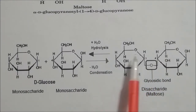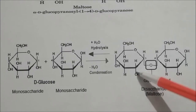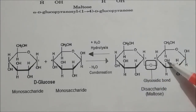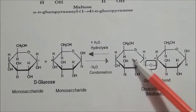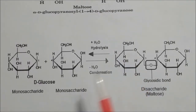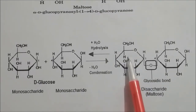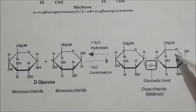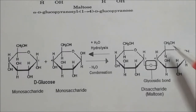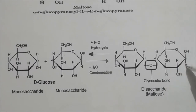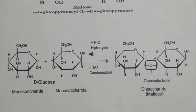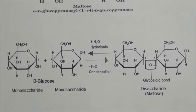In maltose, the non-reducing (acetal) subunit must be alpha; the reducing end can be alpha or beta (anomeric carbon is free). The anomeric OH at the reducing end can be axial (alpha) or equatorial (beta). This is the pictorial presentation of maltose structure.